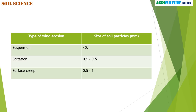These are the types of wind erosion and their size of soil particles. In suspension type: less than 0.1 mm. Saltation: 0.1 to 0.5 mm. Surface creep: 0.5 to 1 mm.